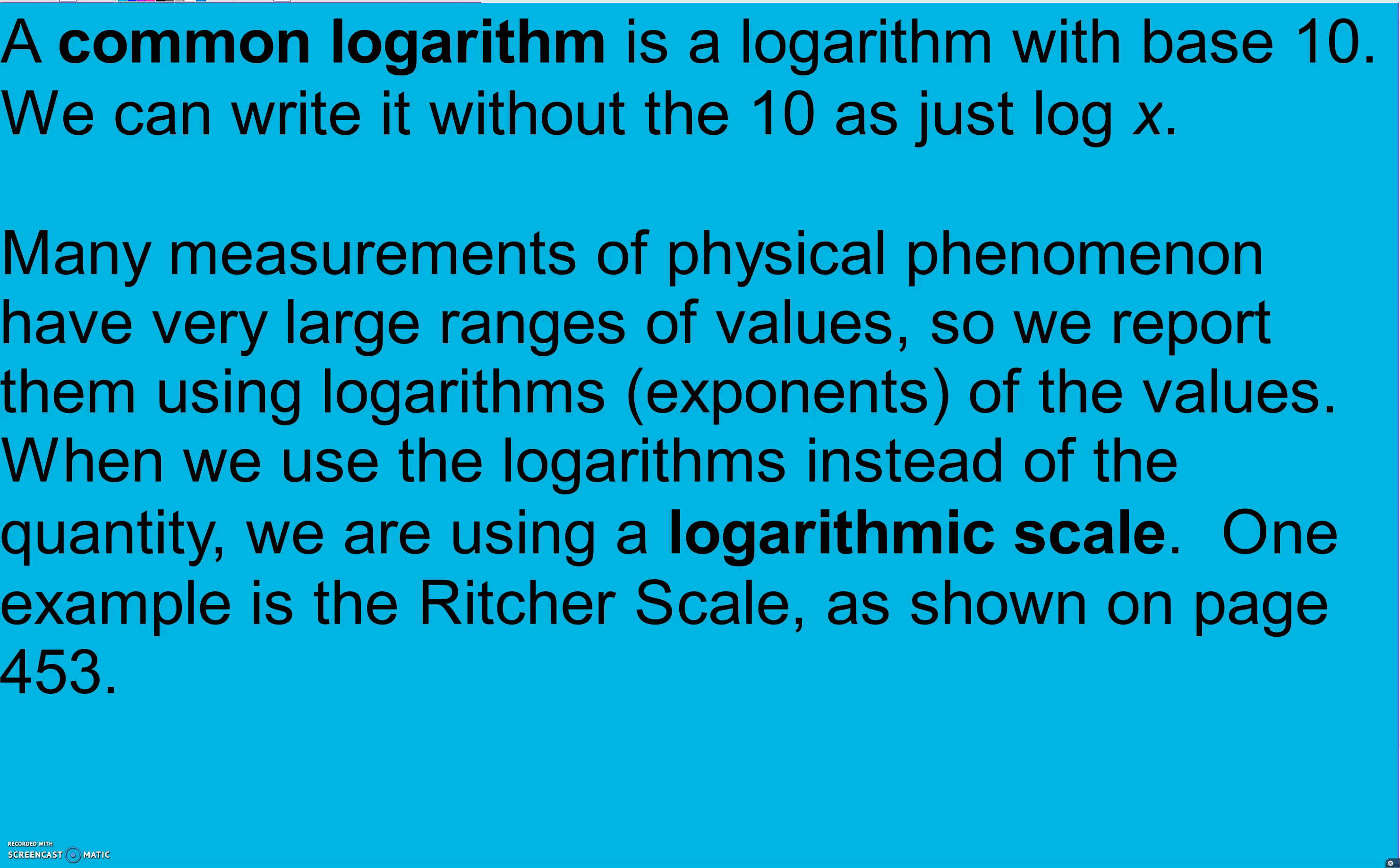So if we look on page 453, they have a picture of the Richter scale there. And notice that when we go up by 1, for example, on the Richter scale, an earthquake of 5 is not just one more time intense than an earthquake of 4. Energy released each time is times 30. So to go from 4 to 5, it's actually 30 times more energy released to go up by 1 on the Richter scale. And again, the Richter scale deals with earthquake intensities.